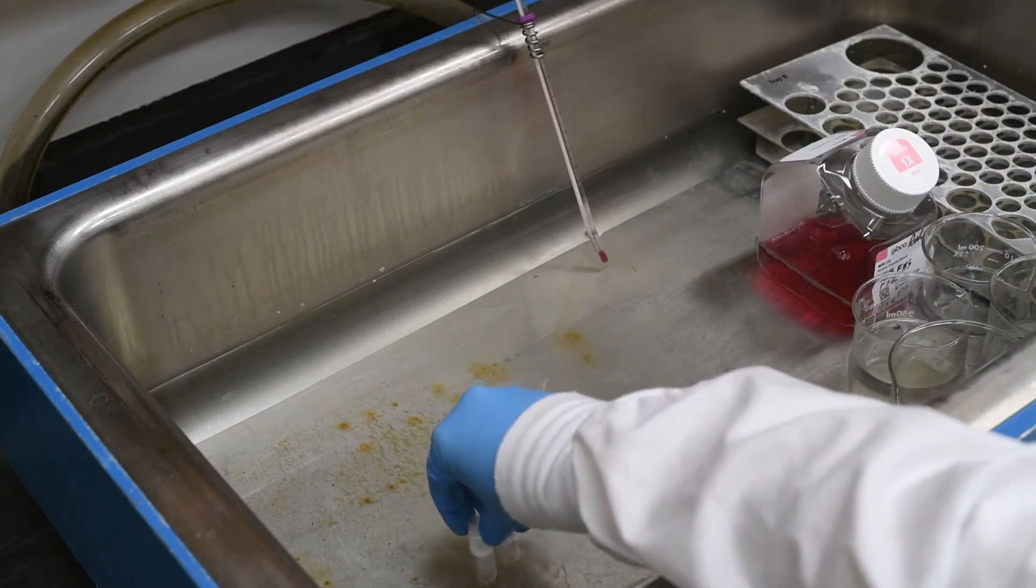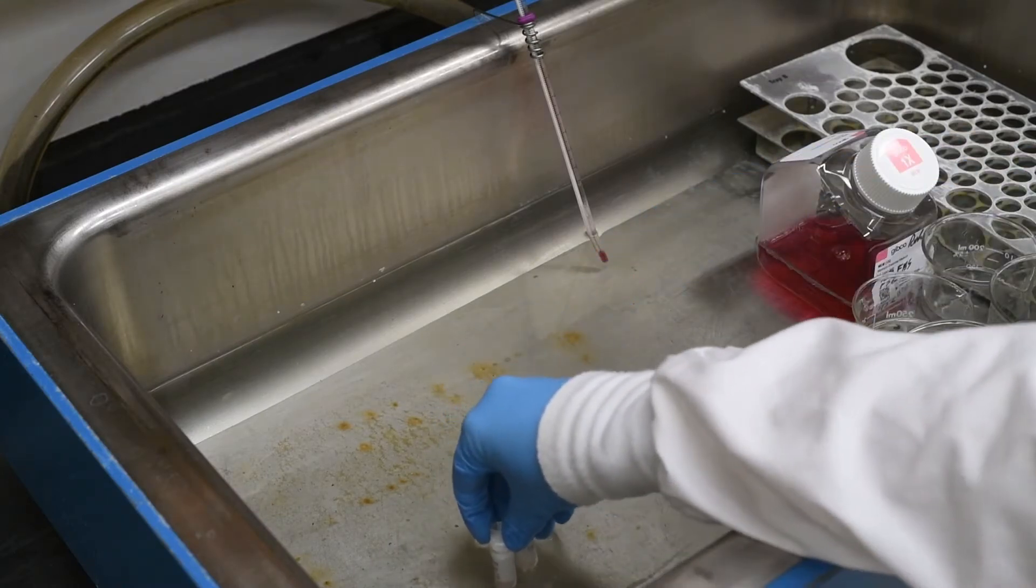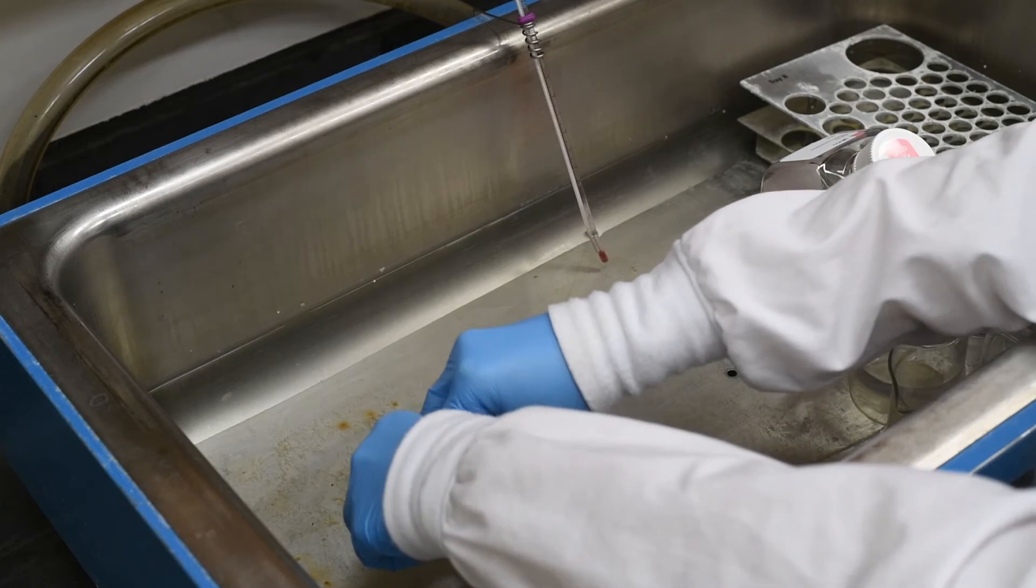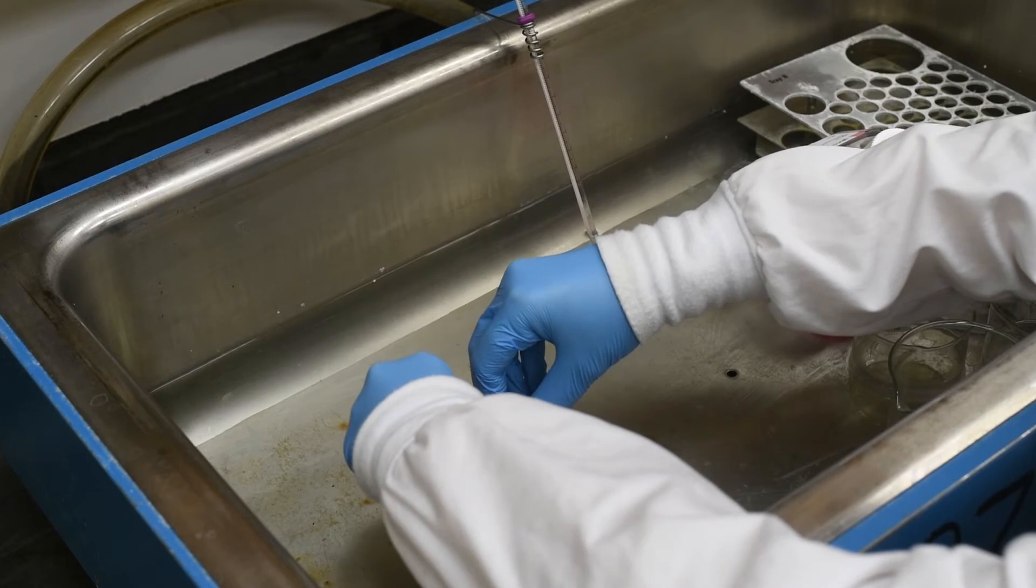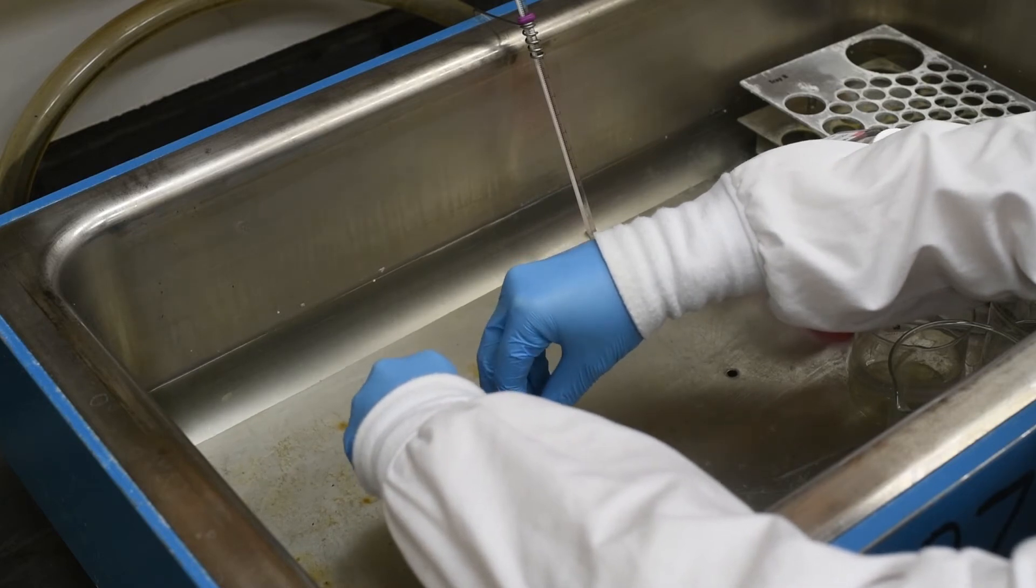To remove your cells from the liquid nitrogen, follow the same steps you used to place your cells inside of it. Cells should generally be thawed as quickly as possible above room temperature because a slow thawing process can damage cells.